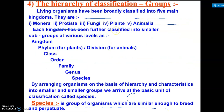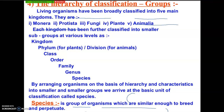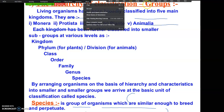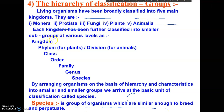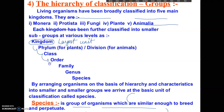This hierarchy chart is very important. All classification is divided into a hierarchy. The largest unit of classification is called kingdom. After kingdom comes phylum, then class, then order, then family, then genus, then species. Species is the smallest unit of classification.